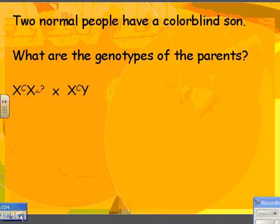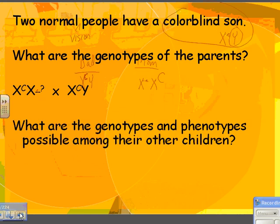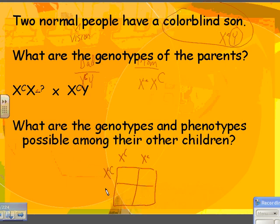What are the possible genotypes and phenotypes among their other children? The mom's eggs separate as X big C and X little c. The dad had normal vision, so he's got an X chromosome that's just fine and a Y chromosome. Be very careful with C's — make your little c's and big C's look different. I try to put a kind of a script for my big C. Make sure your big C's look different from your little c's.